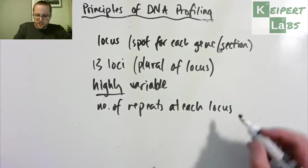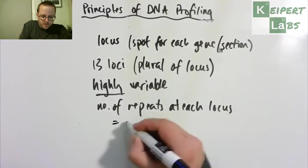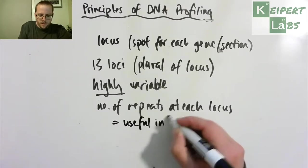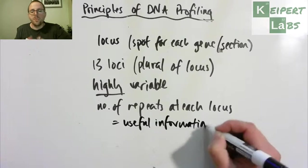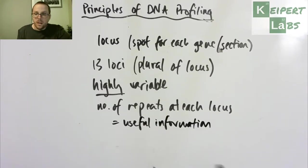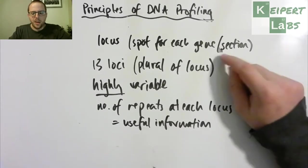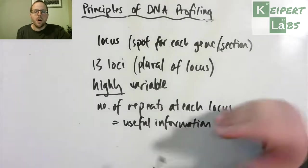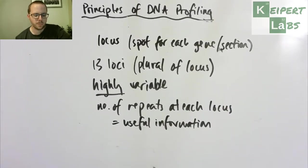So the number of repeats at each locus equals our useful information. Not being able to identify what the sequence is, but looking at how many times it repeats. And one locus may not be overly unique, but when you consider that 13 times over, and looking at the values that you have at this locus and that locus and that locus and that locus, that when you consider them all together, that we get a very high probability. We have the great opportunity to be able to identify someone individually by the information at each of these loci.